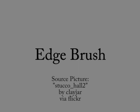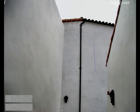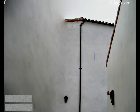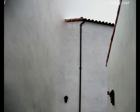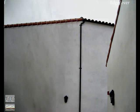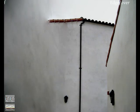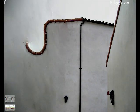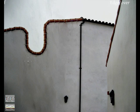A demonstration of the edge brush. I capture the blank wall texture and use it to remove the edge between the left and back walls. Next, I capture these roof tiles. I can replay them to extend the roof line. I can also create a more whimsical roof line.